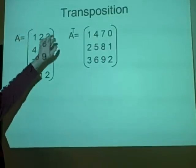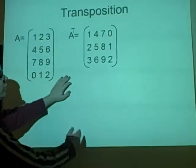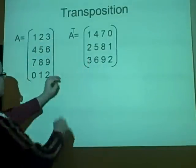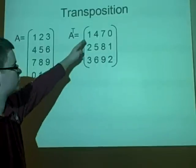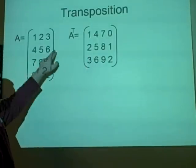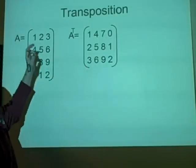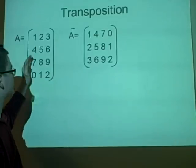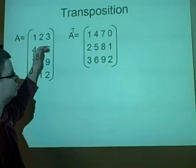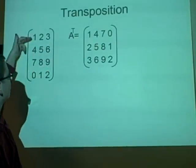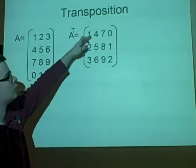That's 1 2 3, and the same for all the rest. It should work out that the columns have now become the rows, so we have 1 4 7 0, 2 5 8 1, 3 6 9 2.